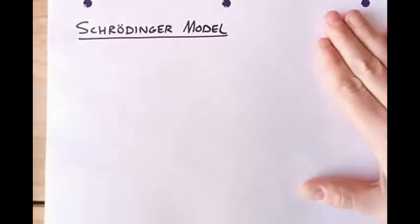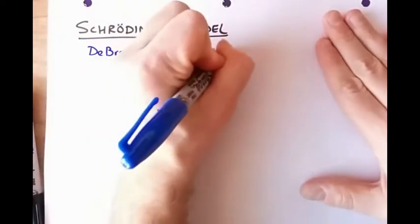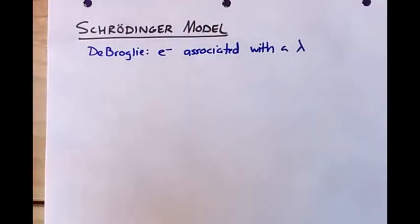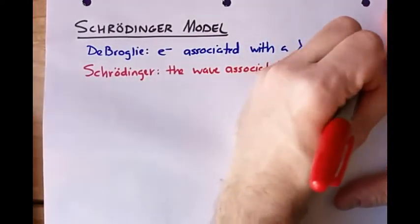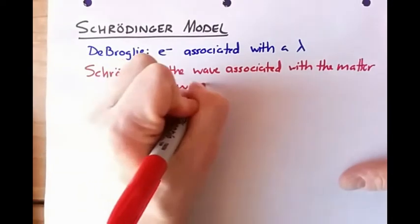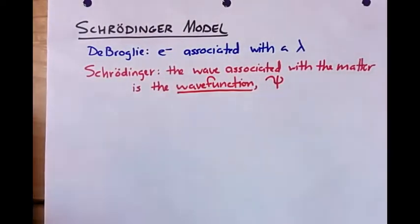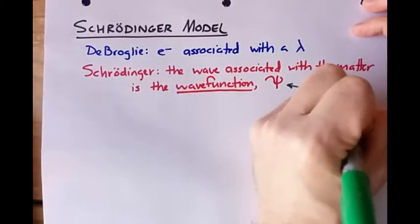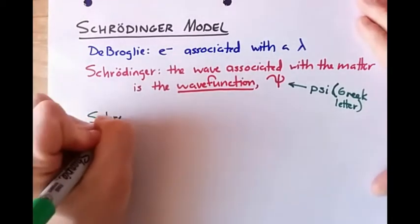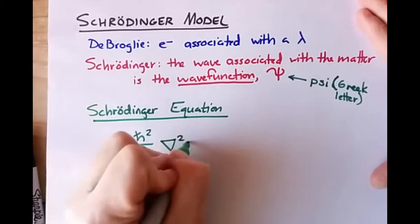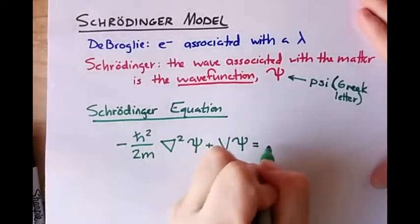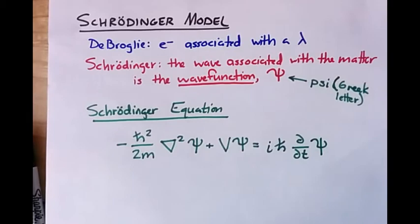This all leads us to the Schrödinger model. De Broglie told us that electrons are associated with a wavelength — the de Broglie wavelength. Schrödinger said that the wave associated with a piece of matter, like the electron, is the wave function, represented by the Greek letter psi — it looks like a trident that's melted a bit on the side. He also had an equation — the Schrödinger equation — to tell us what that wave function is.